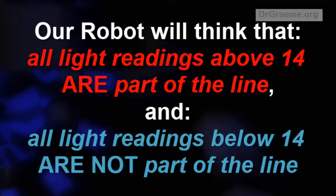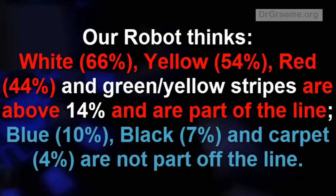This will mean now that white, red, yellow, and green yellow are part of the line. And the blue, black, and the carpet are not part of the line.